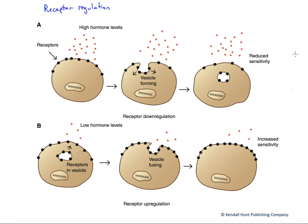While it might be intuitive to think that the cellular response to a particular hormone is entirely dependent upon the concentration of that circulating hormone, that's not entirely true. In fact, receptors are also regulated. We can regulate their numbers or their affinity — the likelihood, the strength with which they bind the particular hormone. Looking first at receptor regulation in terms of numbers, we have up and down regulation.